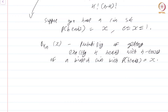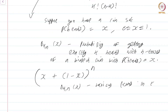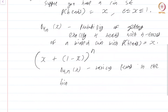If you are uncomfortable with probability, there is another way to remember what b_{k,n}(x) are: just look at x plus 1 minus x, the whole raised to the power n. Then b_{k,n}(x) are the various terms in the binomial expansion. This is another way to remember.